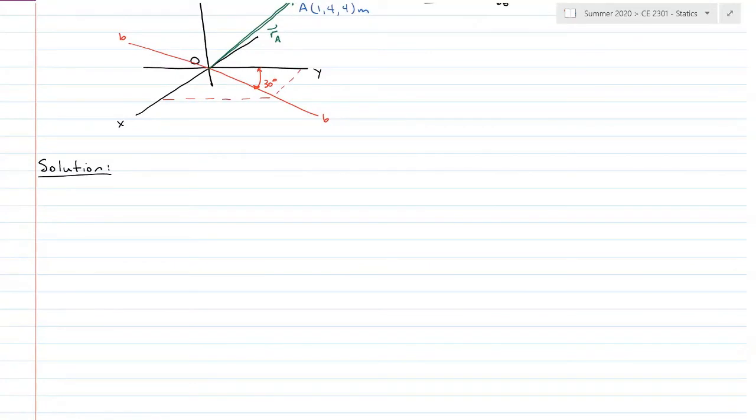So coming down here, I have the force vector, which is negative 20j newtons. I will have my position vector A, which is going to be i plus 4j plus 4k, and we are in meters for that position vector. And then last, I need a unit vector representing line BB.